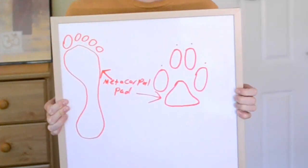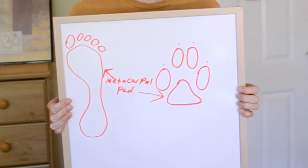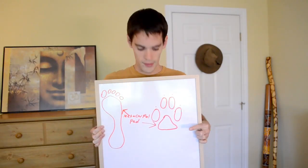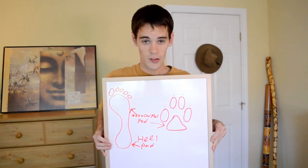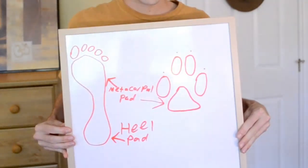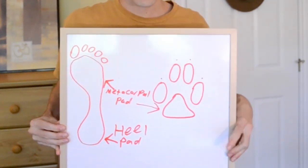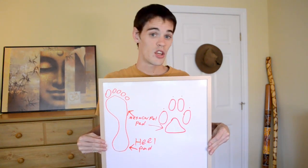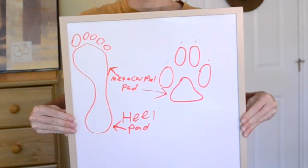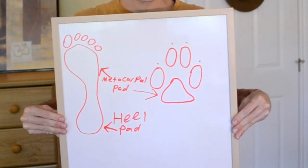Our third track component is called the metacarpal pad — this area right here — and that's your metacarpal pad. It's not to be confused with the heel pad. Where's our heel pad on our dog track? This is where we see one of the other major differences between humans and dogs. Dogs don't really have heel pads that register in their tracks — they're missing our fourth track component, and they actually walk on their toes. This is a good demonstration of why knowing the track topography is so important.